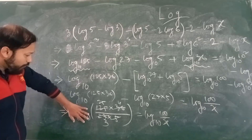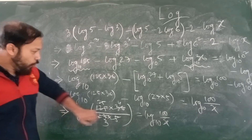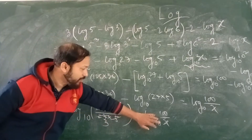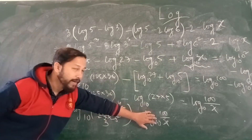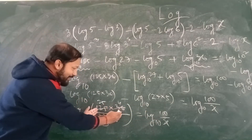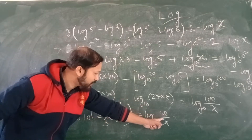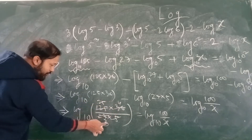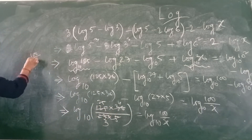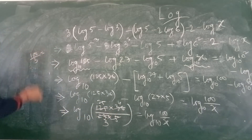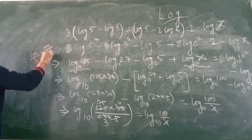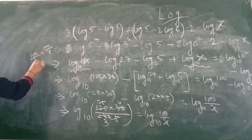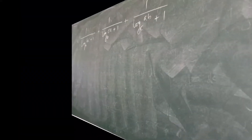Now the log cancels from both sides. So what we have is: 100/3 equals 100/x. Cross-multiplying, we get x = 3. This is the answer to this question. Understood?